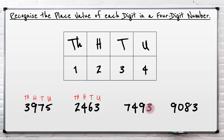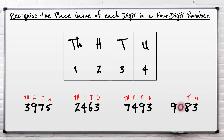So this one, we've got three units, nine tens, four hundreds and seven thousands. And the final one, we've got three units, eight tens. We don't have any hundreds here, but we need to make sure that we identify that this column would be the hundreds column. And then we've got nine thousands.